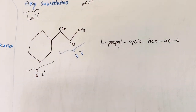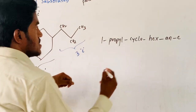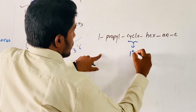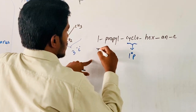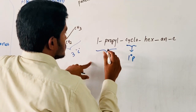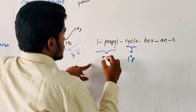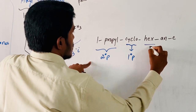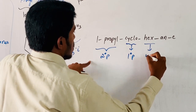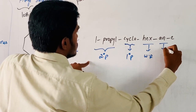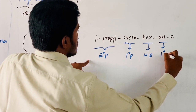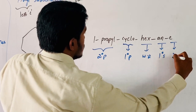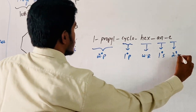The parts of nomenclature here: 'Cyclo' is the primary prefix, '1-propyl' is the secondary prefix, 'hex' is the root word, 'ane' is the primary suffix, and small 'e' is the secondary suffix.